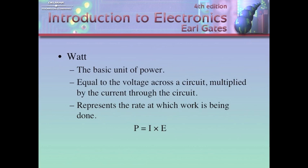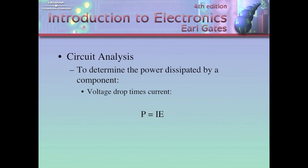The watt is a basic unit of power. It's equal to the voltage across the circuit multiplied by the current through the circuit. Watt represents the rate at which work is being done. P is equal to I times E. Power measured in watts equals current in amps times voltage measured in volts. You multiply that out, and you end up with the power in watts. Circuit analysis to determine the power dissipated by a component: we take the voltage drop times the current. P equals I times E.